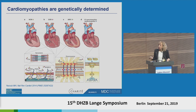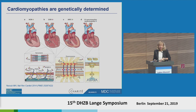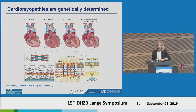We know that cardiomyopathies are genetically determined. We have worked on many genes, and most of the genes that cause HCM are sarcomeric genes. For DCM, it's much more heterogeneous — sarcomeric genes, but also cytoskeletal genes or mutations in mitochondrial genes. ARVC is specific; it's more a disease of the desmosome. And left ventricular noncompaction is mostly a disease of the sarcomere, with some specific genes also discovered.